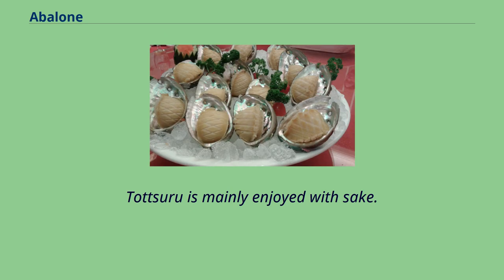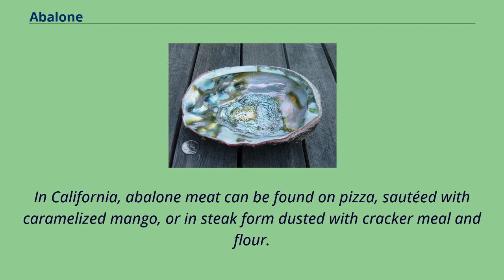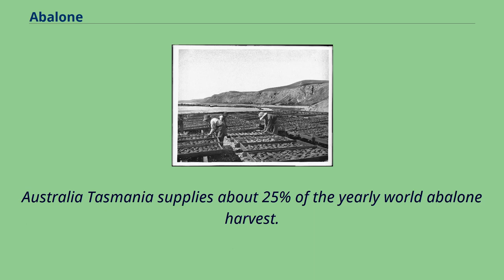Tatsuru is mainly enjoyed with sake. In California, abalone meat can be found on pizza, sautéed with caramelized mango, or in steak form dusted with cracker meal and flour. Australia-Tasmania supplies about 25% of the yearly world abalone harvest.